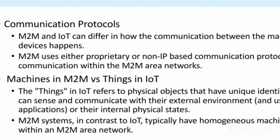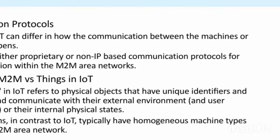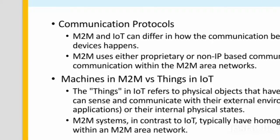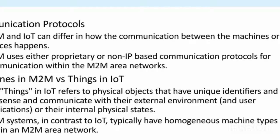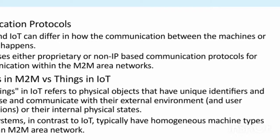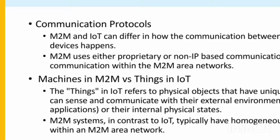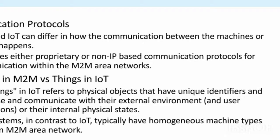Difference between IoT and M2M: M2M is networking of nodes or machines, whereas IoT is the Internet of Things. Regarding communication protocols, M2M and IoT differ in how communication between machines or devices happens. M2M uses either proprietary or non-IP based communication protocols for communication within the M2M area networks.